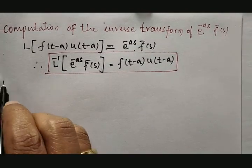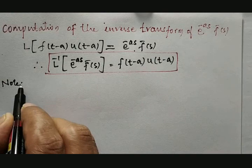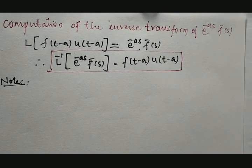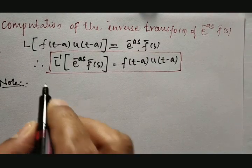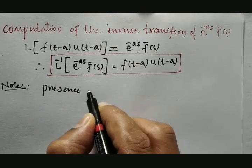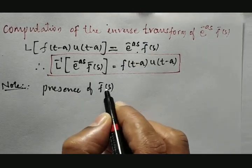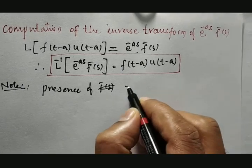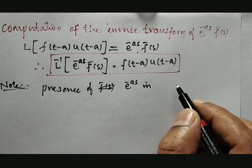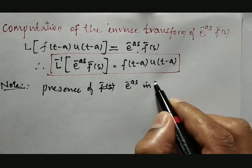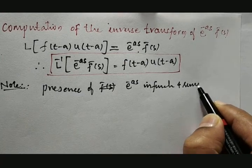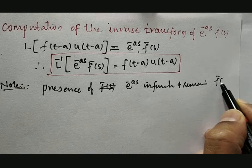Here we need to remember and concentrate on three points. First point: identify the presence of e raised to minus as in the given function. The remaining part will be treated as f̄(s).